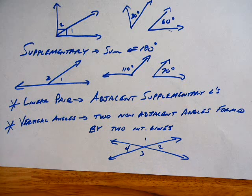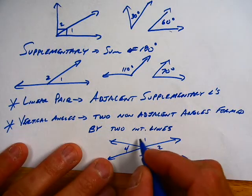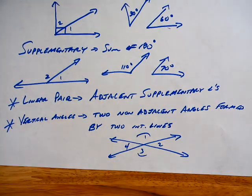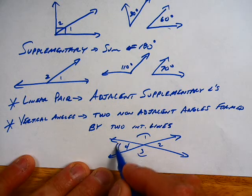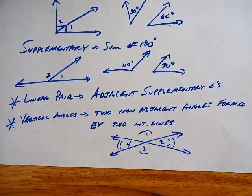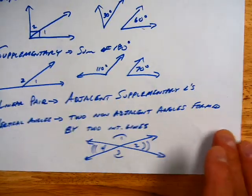Angles one and two, are they vertical angles? No, they're not, because they're next to each other. One and three are vertical, and they're always equal. Two and four are vertical angles, and they're always equal.